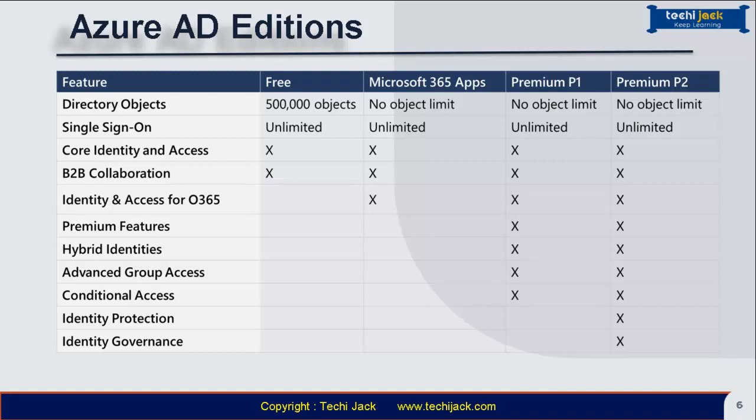The Azure Active Directory Free plan provides user and group management, on-premises directory synchronization, basic reports, and single sign-on across Azure, Microsoft 365, and many other popular SaaS apps. If you sign up for Microsoft 365 Apps, you still have an Azure AD account, and this edition provides identity and access management for Microsoft 365 apps, including branding, multi-factor authentication, group access management, and self-service password reset for cloud users.